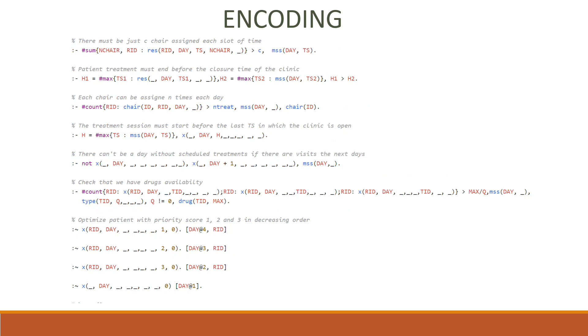In the second half we have other constraints, and in particular in the last row before the weak constraints we have a constraint that checks that the amount of drug used is less than the available quantity. To do so the encoder counts how many times is assigned a particular drug, then it divides the available quantity of the drug for the dose associated with its usage.